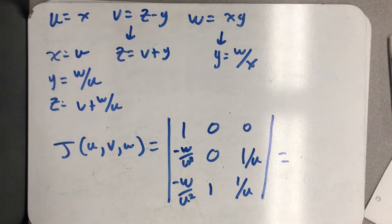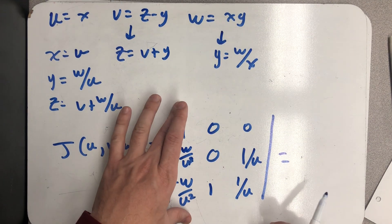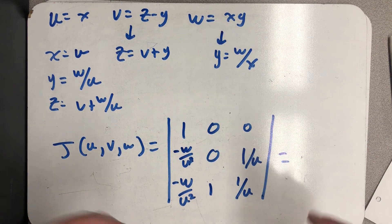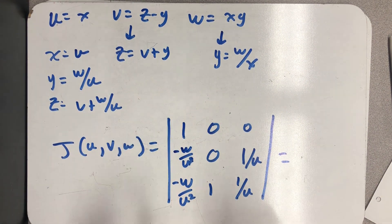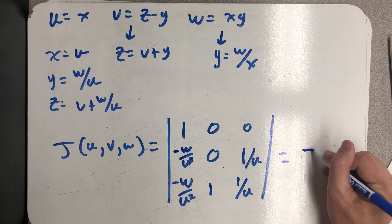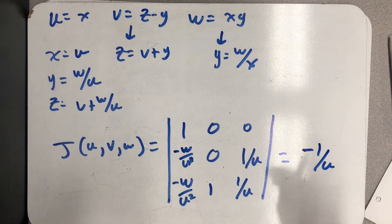So expanding of that top row, I'd have one times the determinant of this two by two, which this should be a one over u there, which I hope I said out loud. But if I didn't, it's a one over u. Because partial with respect to w here, right, I have one over u times w. Okay, so I just need to take the determinant of this little two by two. So I get a minus one over u. And there's my Jacobian.